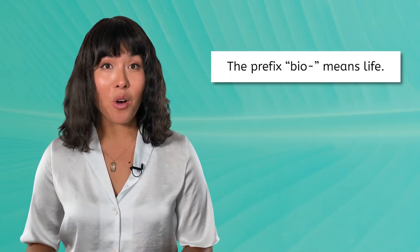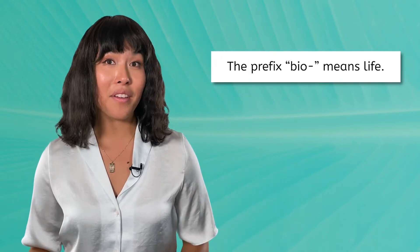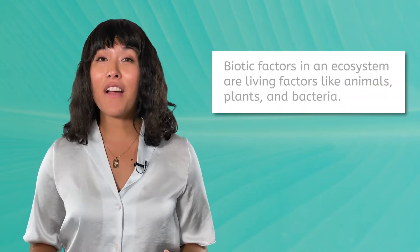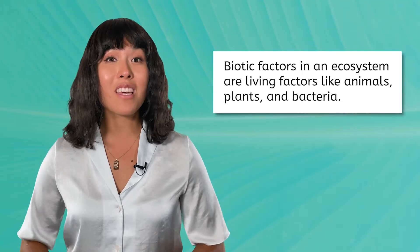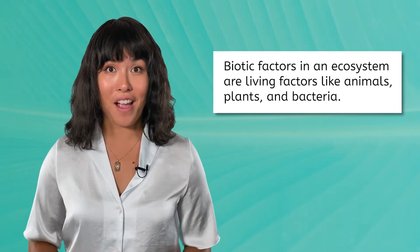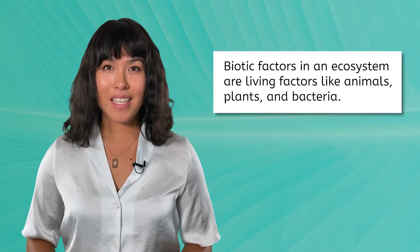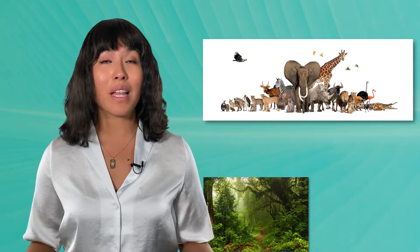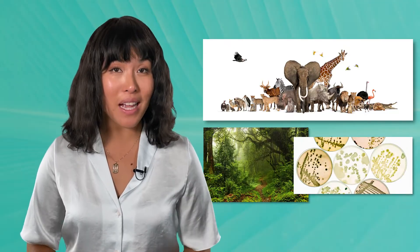As we mentioned in the introduction, prefixes can tell you a lot about the definition of a word, especially in science. For example, biotic — the prefix bio means life. Biotic factors in an ecosystem are the living factors. This includes things like animals, plants, and bacteria.